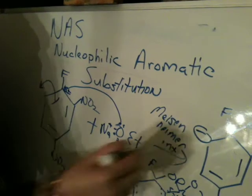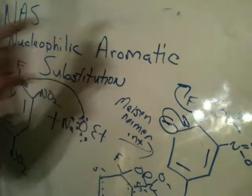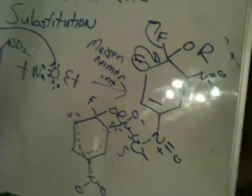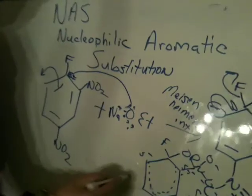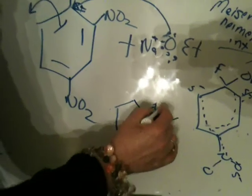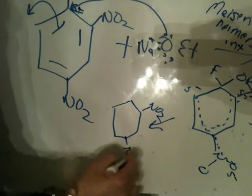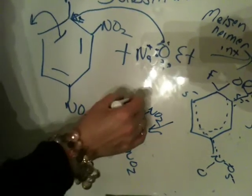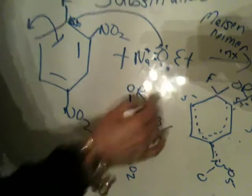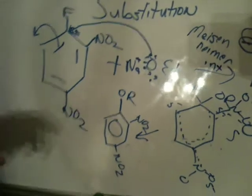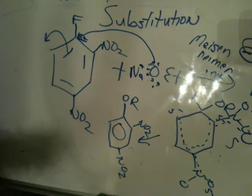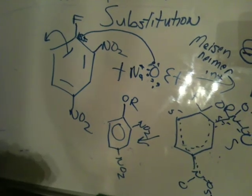Then what happens? The negative charge comes in and the leaving group leaves. Notice the leaving group is not coming off in the rate-determining step — the nucleophilic addition is the rate-determining step. The most important thing is the polarity. When the group leaves, we have a substitution — the ring re-aromatizes. Synthetically, this gives you a great entrance into putting oxygen groups on aromatic rings, though it's restricted in that you need some kind of electron withdrawing group.